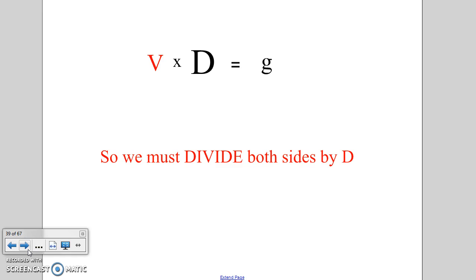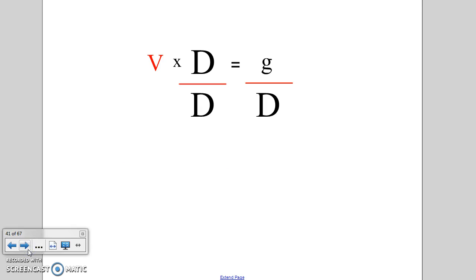So we want to divide by D on the left, but also do it on the right. We divide out the D on the left, we divide out the D on the right, the D's on the left cancel, and the formula reduces to V equals g divided by D, which looks like that.